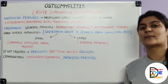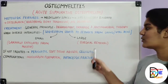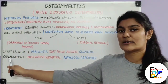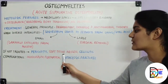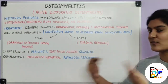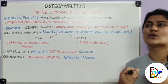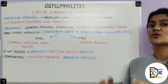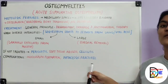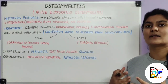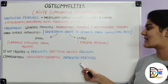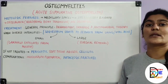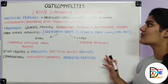If acute suppurative osteomyelitis is not treated, it will convert to periostitis, soft tissue abscesses, and cellulitis. Complications include involucrum formation — new bone formation on the necrosed bone — and pathologic fractures, because the bone is weakened and destroyed by the infection and any trauma may cause fracture.